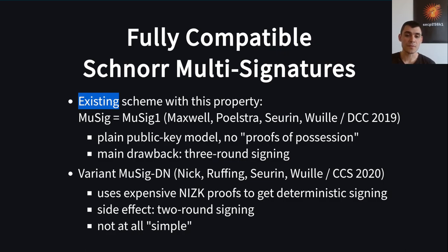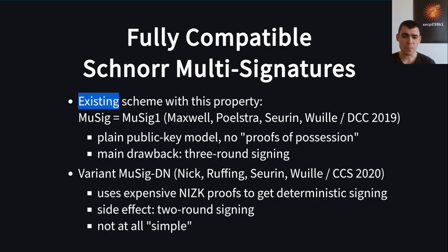One way to fix this problem is to use a large enough hammer and add an expensive zero-knowledge proof to the signing protocol. As a nice side effect, one can obtain a two-round signing scheme. But due to the complexity of the zero-knowledge proof, this protocol is not at all simple and is currently infeasible to use on dedicated signing devices such as hardware wallets, as commonly used for storing bitcoins.